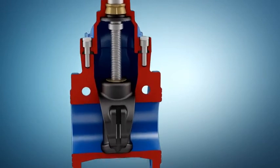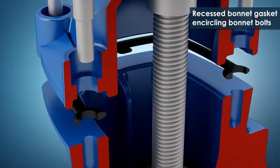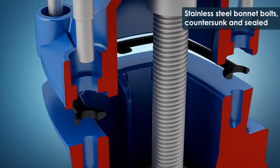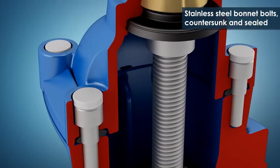The bonnet sealing is placed in a recess and can consequently not be blown out by pressure surges. It is encircling the bonnet bolts for a completely tight sealing. The stainless steel bonnet bolts are countersunk in the bonnet and sealed with hot melt.